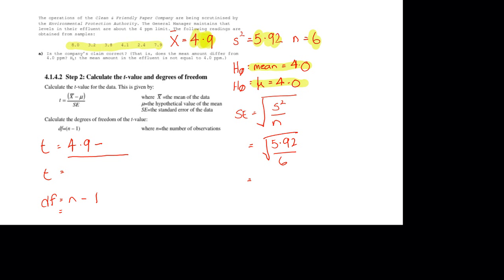So I can start now using the formula for t. t is equal to 4.9, take away the hypothetical value 4, divided by the standard error. Now, the standard error is given in the statistical manual as the square root of the variance divided by the number of observations. So we've got the square root of 5.92 divided by 6, and I've worked that out to be 0.99.